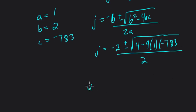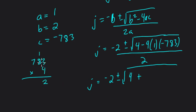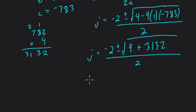Let's keep going. So then J would equal negative 2 plus or minus the square root of 4 plus, because we're multiplying negative 4 times negative 783, which is a positive result. So we have to do 783 times 4. We can use a calculator for that. 4 times 3 is 12, carry the 1. 4 times 8 is 32, plus 1 is 33. 4 times 7 is 28, plus 3 is 31. 3,132 over 2. So J is equal to negative 2 plus or minus the square root of 3,136 over 2.